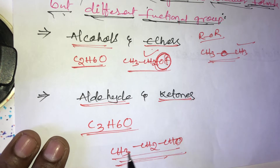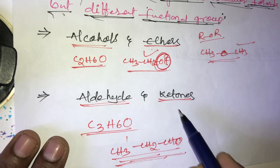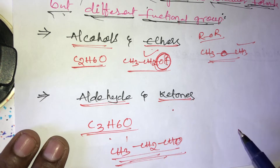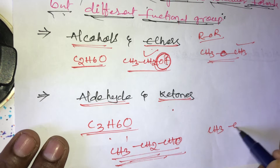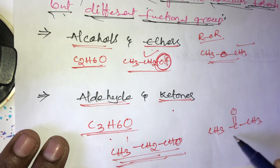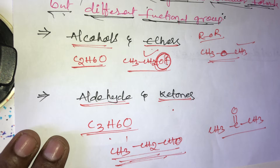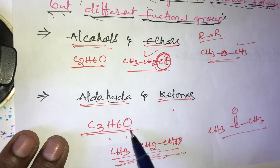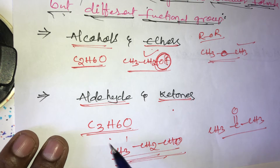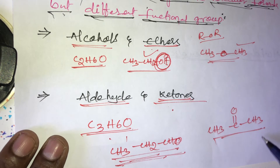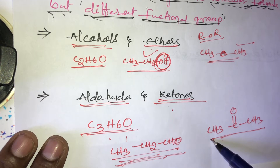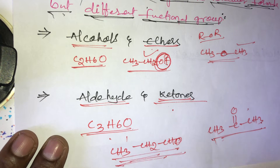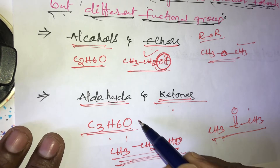In propanal, there are three carbons, six hydrogens, and one oxygen — giving C3H6O. Acetone (a ketone) also has the same molecular formula: CH3COCH3, with three carbons, six hydrogens, and one oxygen — also C3H6O.